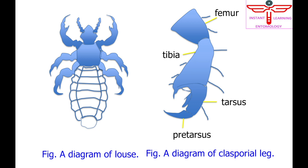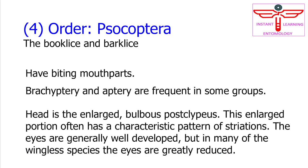There is now evidence that Theroptera may be a subgroup of the Socoptera, which would make the latter a paraphyletic group. Order Socoptera — the book lice and bark lice.